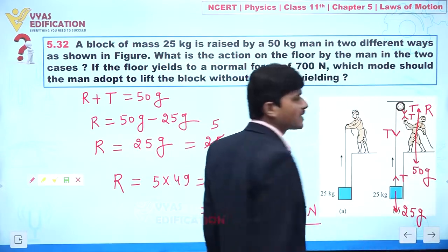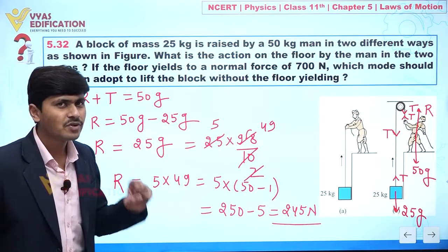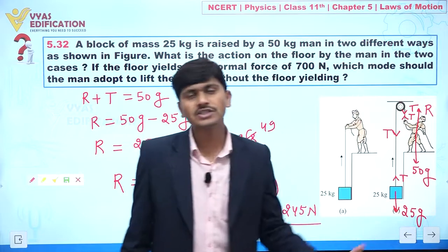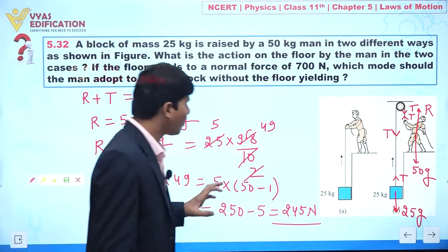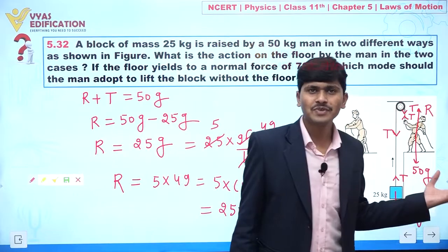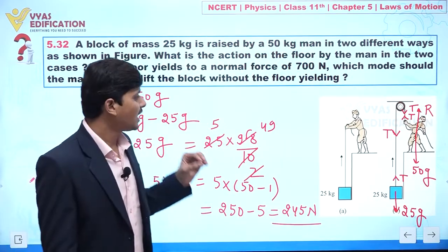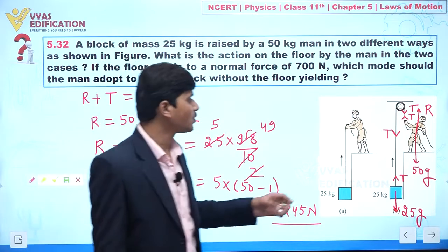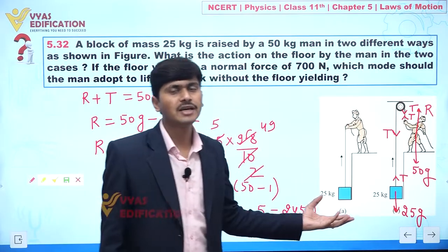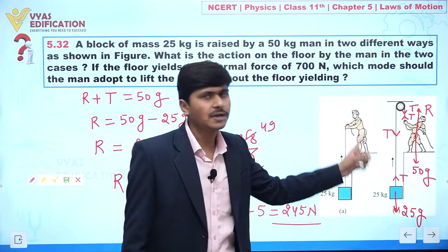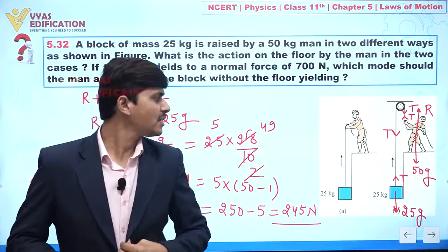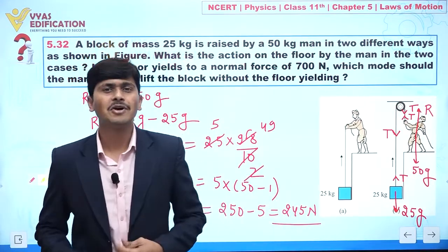The total reaction force exerted by the floor on the person in method B is 245 Newton. Since the floor can withstand up to 700 Newton and we are only exerting 245 Newton, the floor will be safe. Therefore, method B should be adopted to raise the block. Method A produces a force exceeding the yield strength of the platform, while method B is much safer.